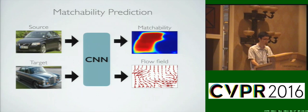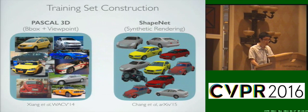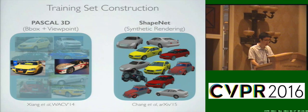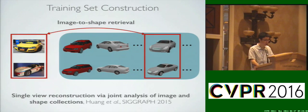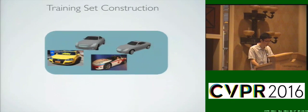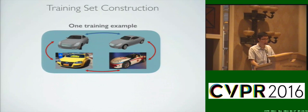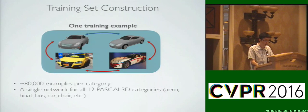For more details on matchability learning, please refer to our paper or come to our poster after the session. In order to construct a training set, we utilize the bounding box and viewpoint annotations on real images provided by Pascal 3D and the large-scale CAD models provided by ShapeNet. To form a training example, we first sample a real image pair from the Pascal 3D dataset, and then use a standard image-to-shape alignment algorithm to retrieve a subset of CAD models to pair with the real images. We extract about 80,000 examples for each of the Pascal 3D categories, and train a single correspondence network for all the categories.